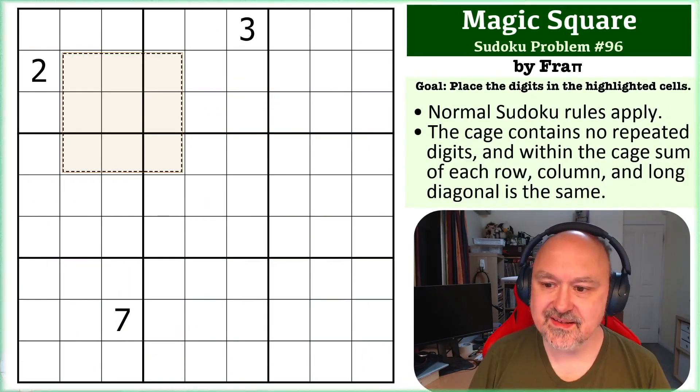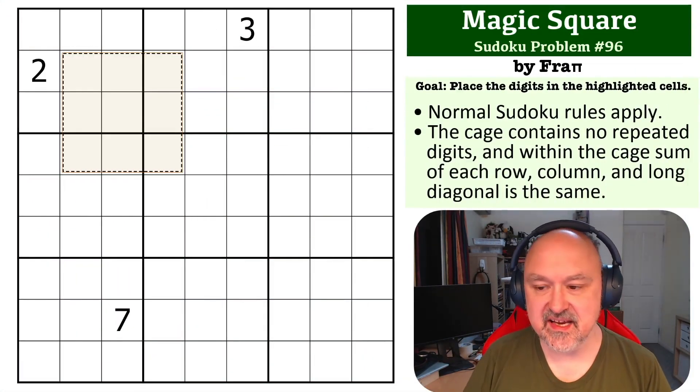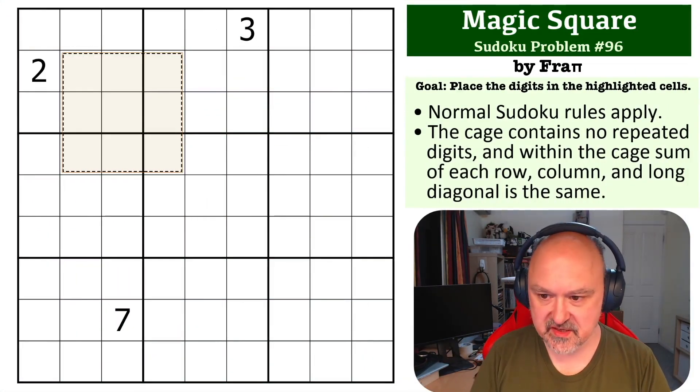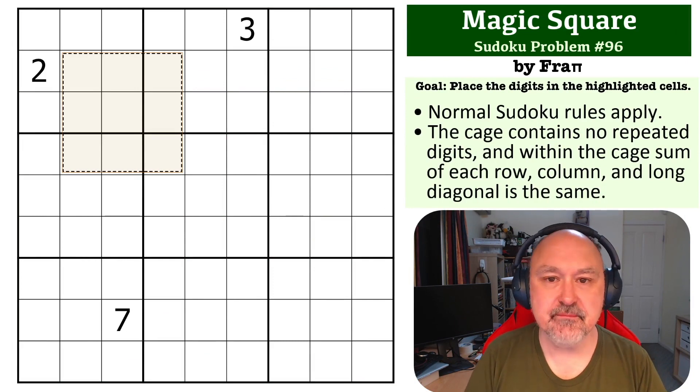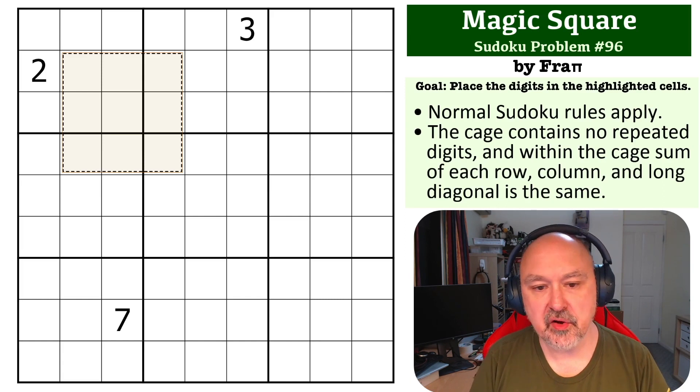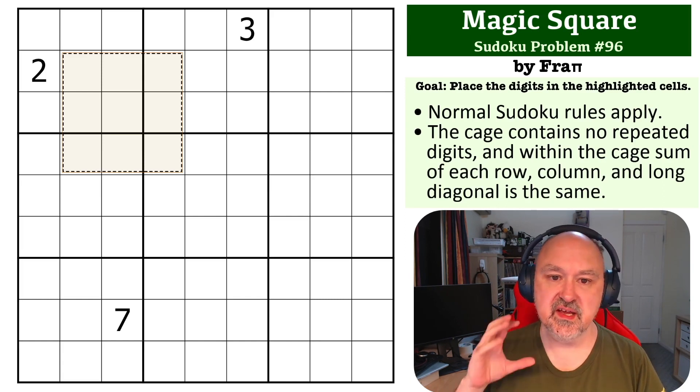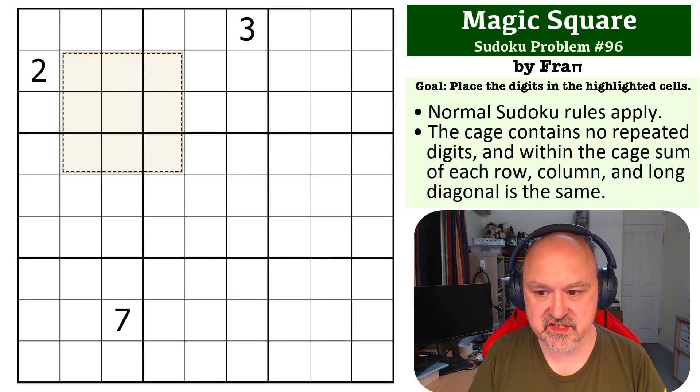Hey everyone, this is Bremster, and this is number 96 in the Sudoku problem series. This is a magic square problem submitted by Frappi, and the goal on this one is to place all of the digits into the highlighted square.